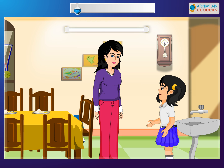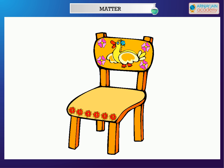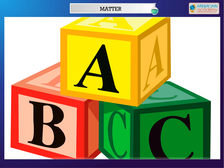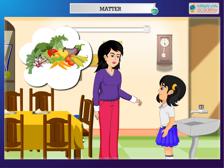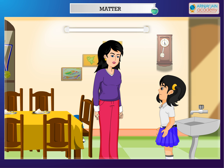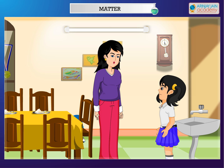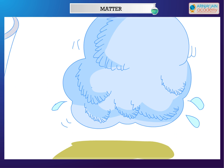What is matter? Anything that has mass and occupies space is called matter. The air we breathe in, the food we eat, the water we drink, and even our bodies are all examples of matter. Matter exists in three states: solid, liquid, and gas.